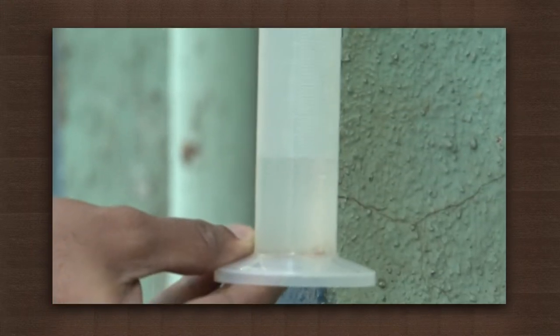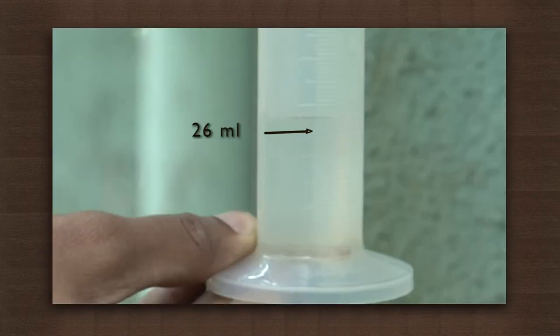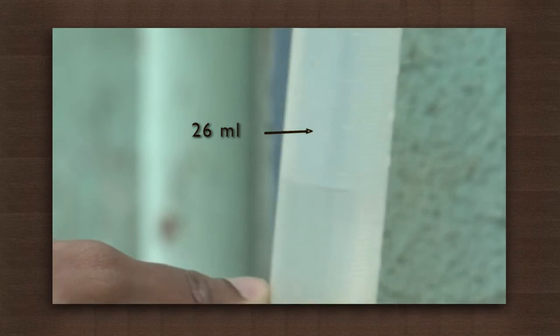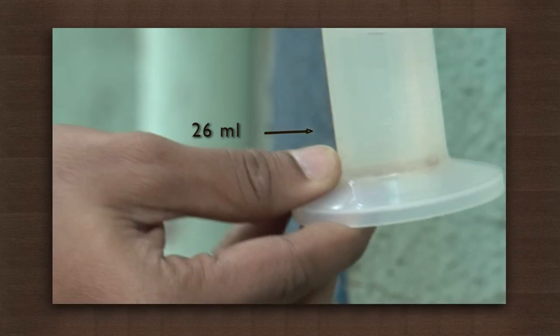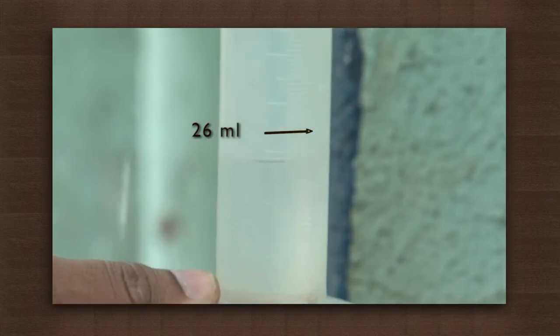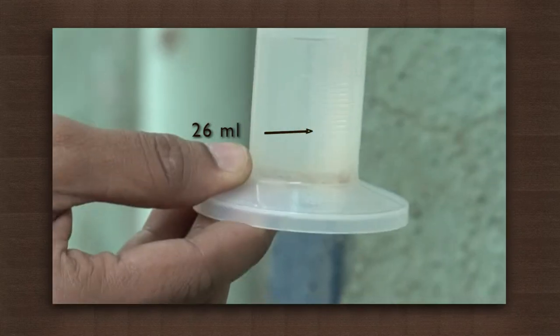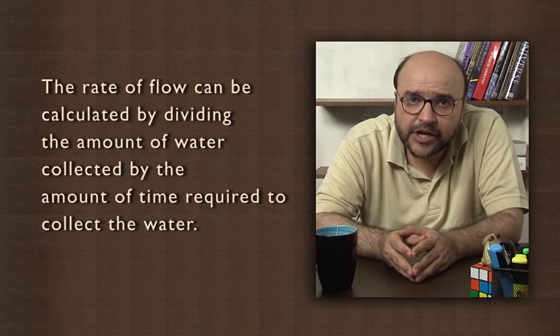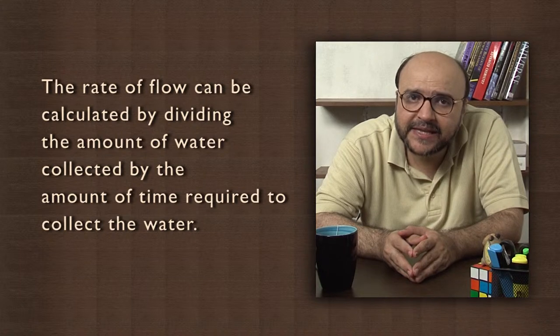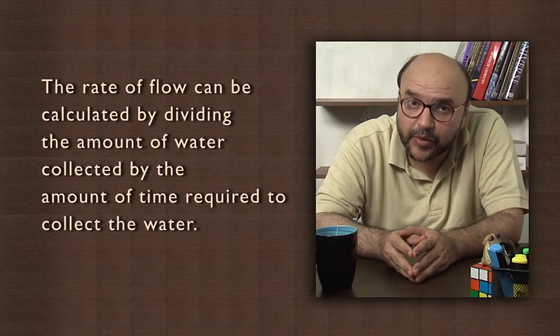Now measure the amount of water collected in the cylinder. We collected 26 milliliters of water in 30 seconds. The rate of flow can be calculated by dividing the amount of water collected by the amount of time required to collect the water.